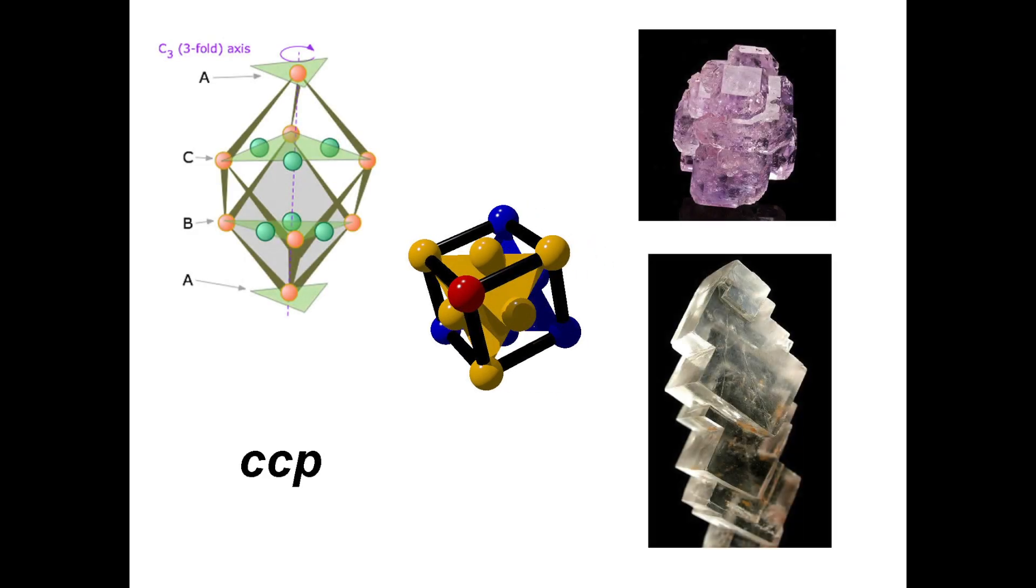Materials that crystallize in a cubic close pack structure often exhibit a cubic crystal habit. These include halite, sodium chloride, and fluorite.